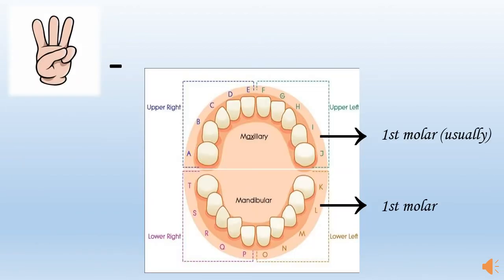The third set of teeth to erupt are the first molars — the primary first molars. In this case also, the upper first molars usually erupt earlier than the lower first molars. There is a general pattern in primary teeth, or milk teeth, where the upper set of teeth usually erupt before the lower set.